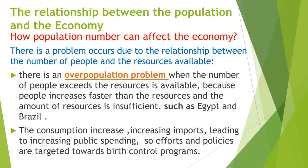After measuring the qualitative dimension, we examine the relationship between population and the economy — how population numbers can affect the economy. This involves the relationship between the number of people and available resources. There is an overpopulation problem when the number of people exceeds available resources, as population increases faster than resources and resources become insufficient. Examples include Egypt and Brazil. The results include increasing consumption, increasing imports, and increased public spending. Efforts and policies in these countries target decreasing birth rates through birth control programs.